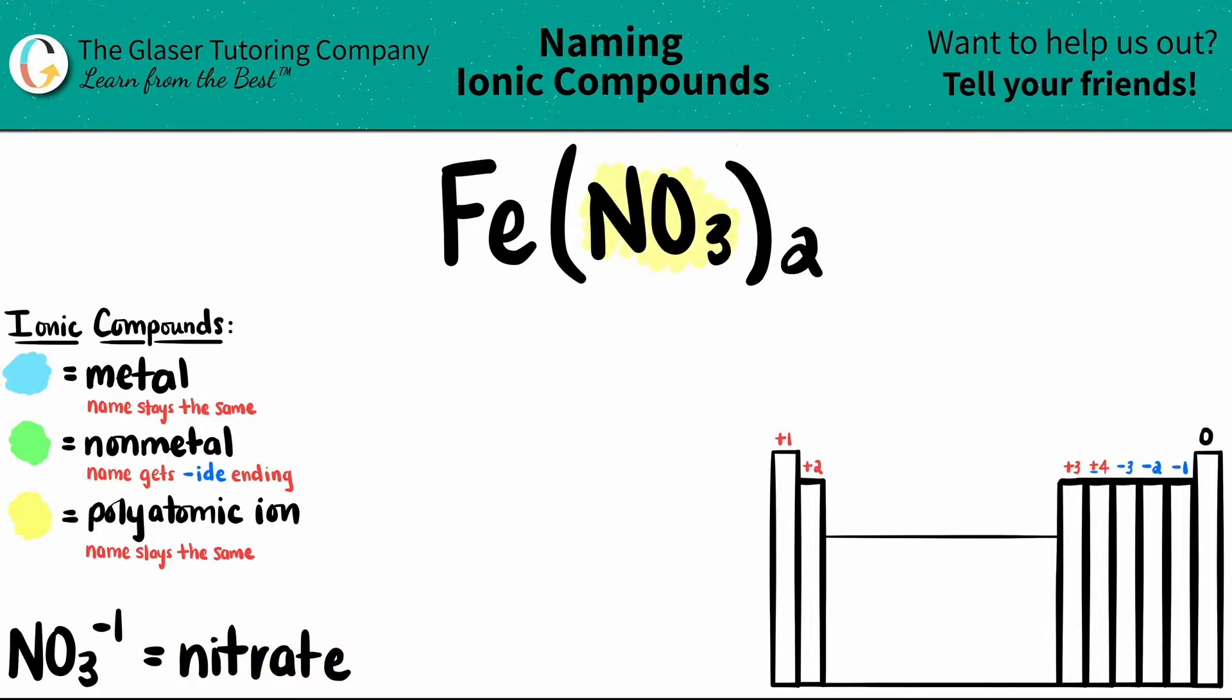So I have that as my polyatomic. And then since it's ionic, the Fe has to be a metal. Ionic compounds always have a metal in them. Now Fe is somewhere here on the periodic table. We'll get to that in a bit. But let's just start the naming.